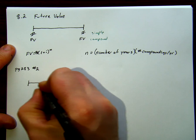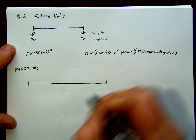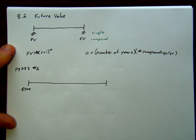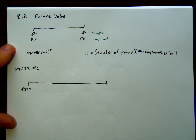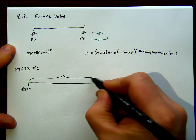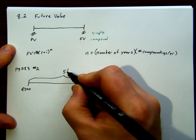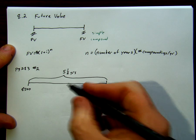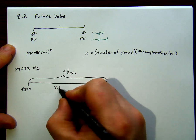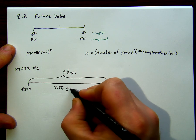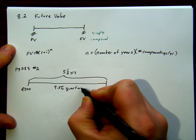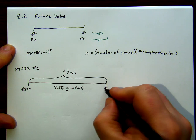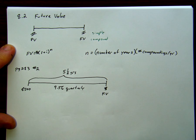Again, we have the same drawing that we always did for simple interest. We're going to take $8,500, invest $8,500 here, wait for a duration of five and a half years, earning 9.5% quarterly. And we want to know what this value is, the future value.